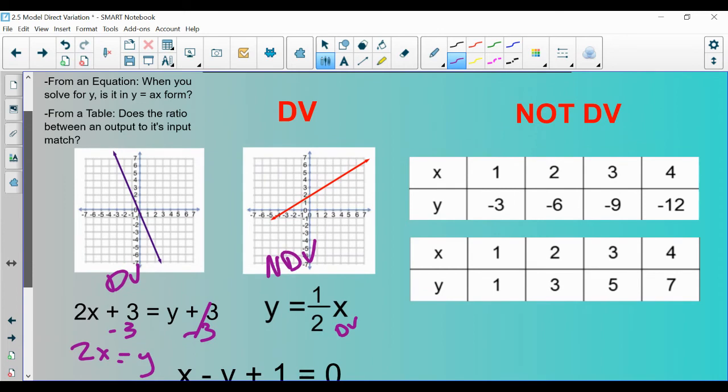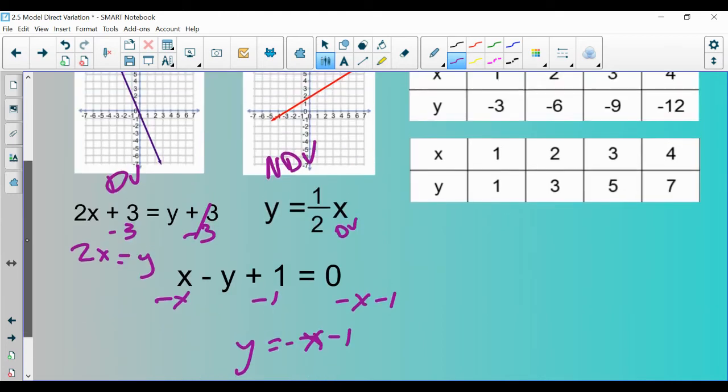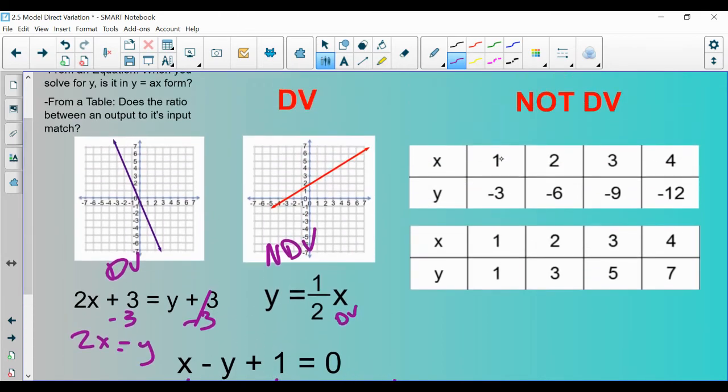And then lastly we are looking at from a table is a direct variation. And remember, what I told you guys to do is to take the output and divide it by its input. Here you get negative 3. Here you divide them, negative 3. Divide them, negative 3. Every time we divide an output by its input, the y value by the x value, we get negative 3. Therefore, it is direct variation.